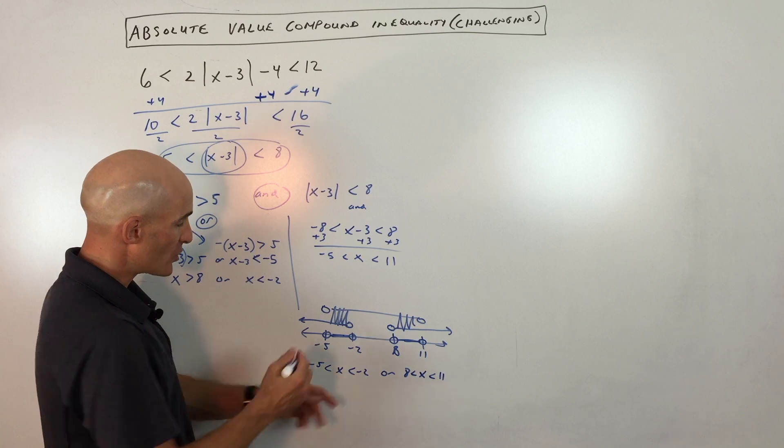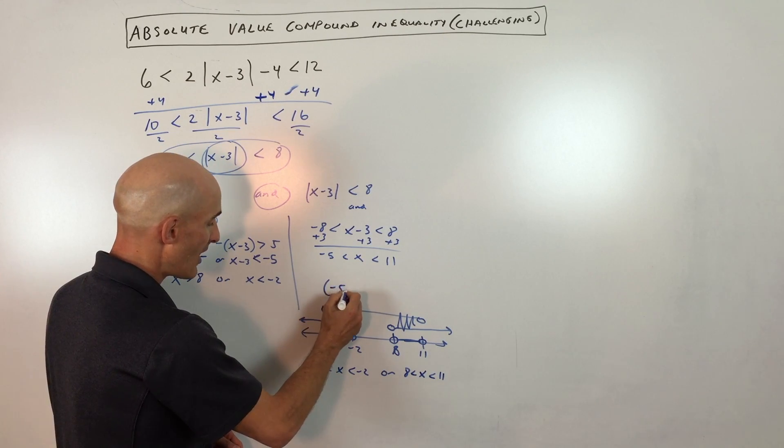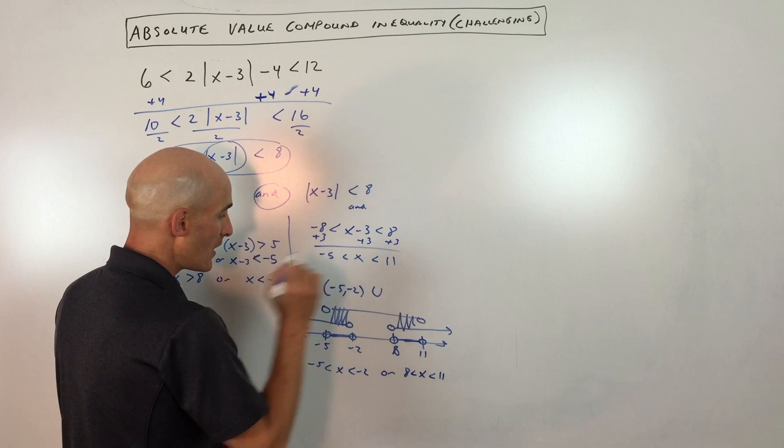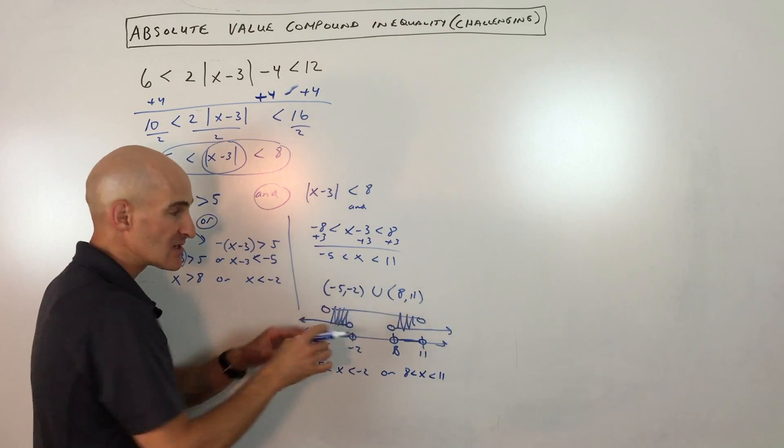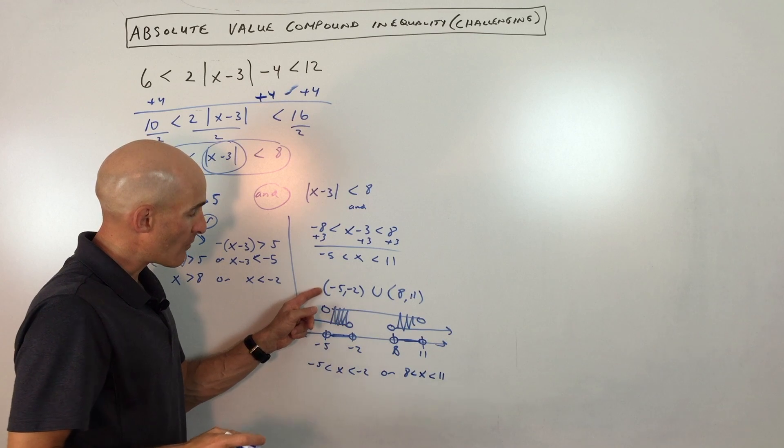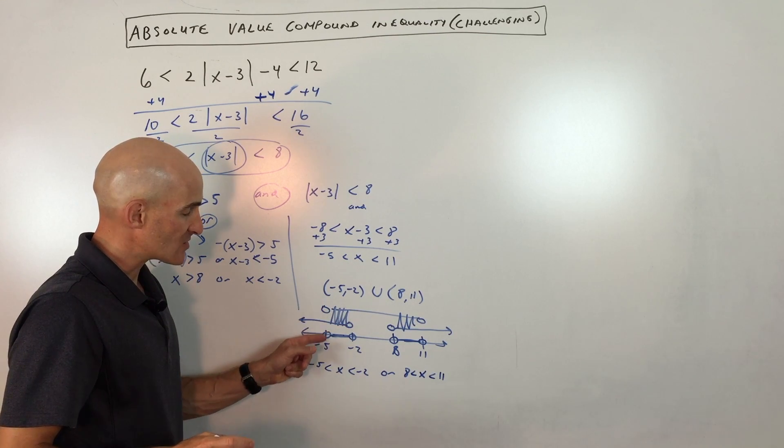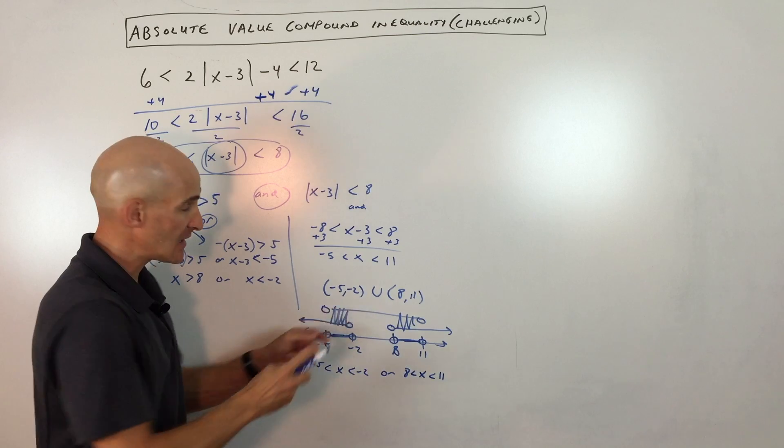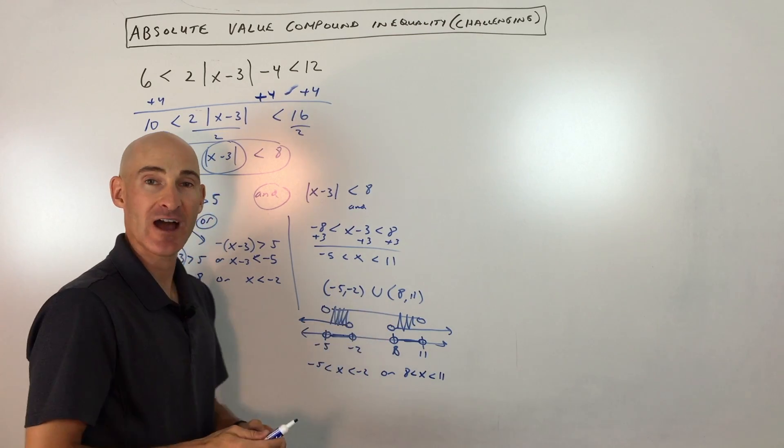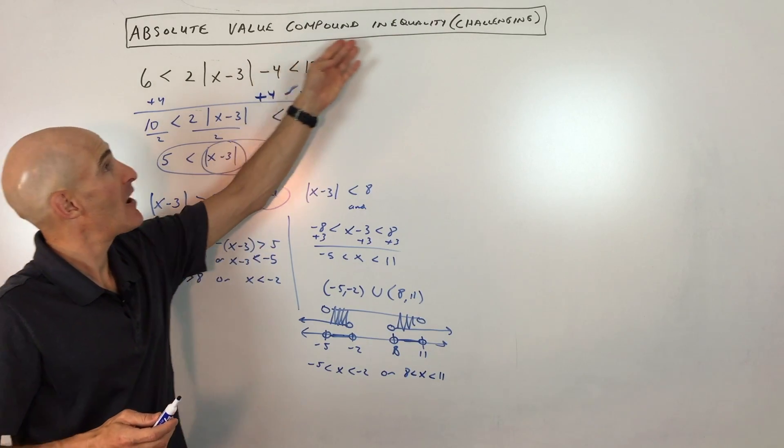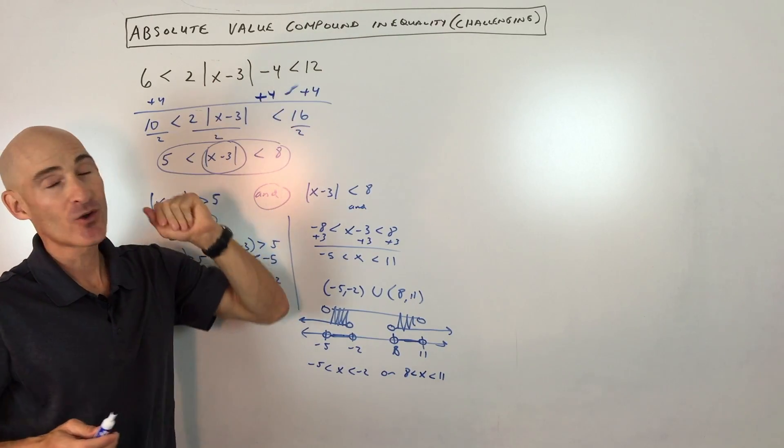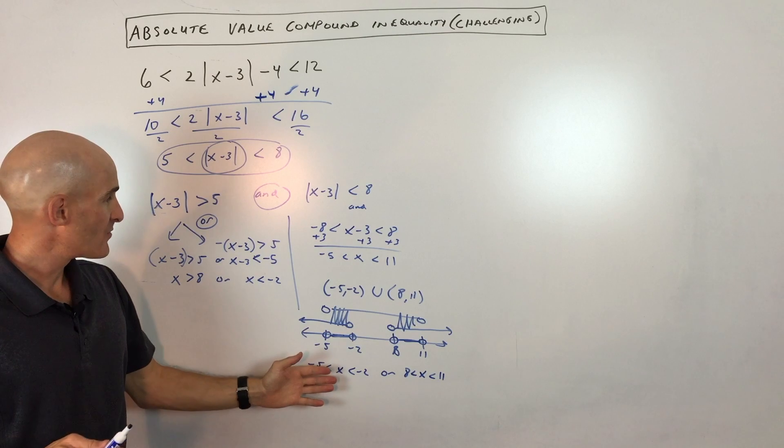Now, if you want to write it in the interval notation, what you would do is you would say negative 5 to negative 2 union 8 to 11. And the parentheses, those curved brackets, represent that it's open, so it's not including negative 5, not including negative 2, it's just in between negative 5 and negative 2.